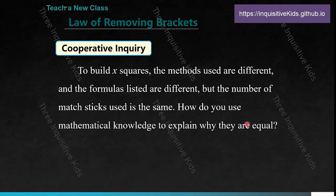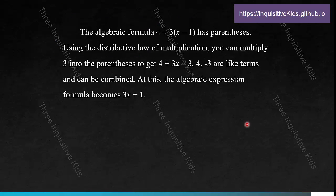Here's the law of removing brackets. To build x squares, the methods used are different and the formulas listed are different, but the number of matchsticks used is the same. How do you use mathematical knowledge to explain why they are equal? The algebraic formula 4 plus 3 times the difference of x and 1 has parentheses. Using the distributive law of multiplication, you can multiply 3 into the parentheses to get 4 plus 3x minus 3.